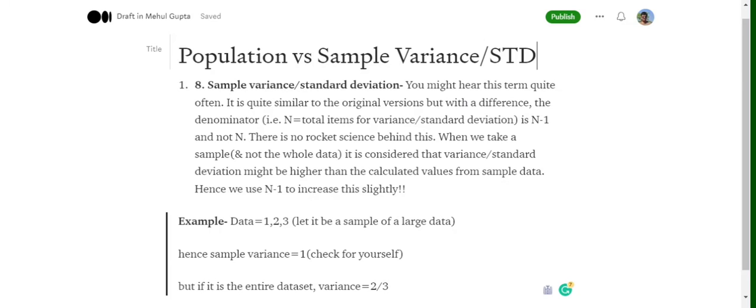So if you remember from schooling, we have a formula for variance that is summation of (x minus mean of x) whole square upon n, where n is the total count and x is the sample.